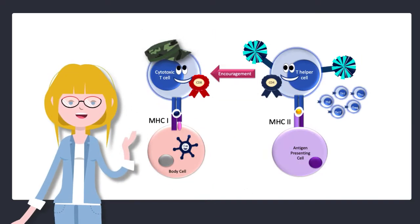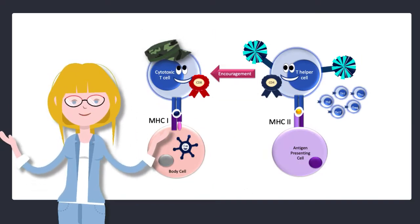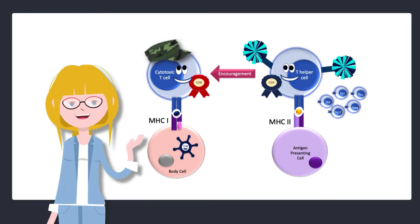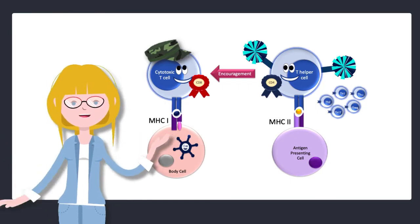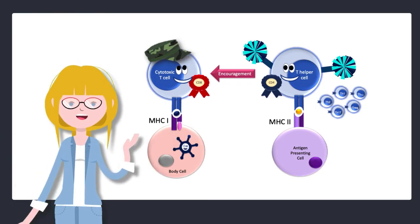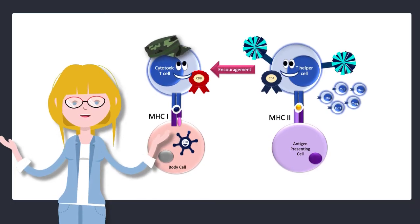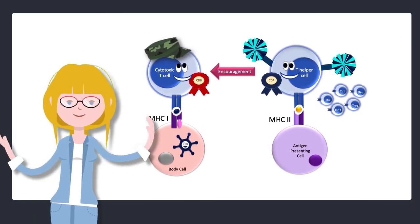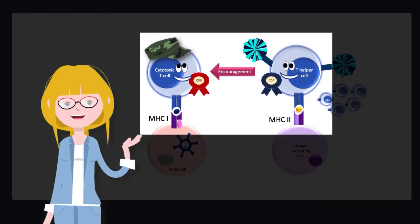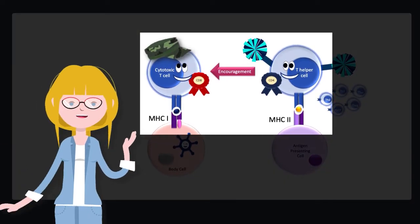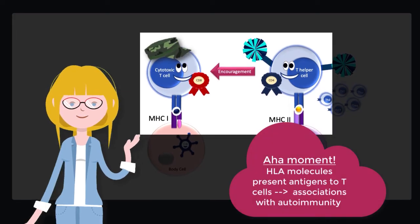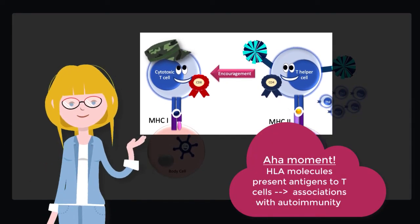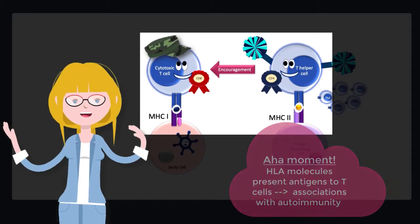If all of that sounds brand new, you need to stop right now and go back to Season 1 of this series and watch the episodes about T cells — that'll give you absolute clarity. Otherwise, if this is familiar, stay with me. With that information top of mind, we can see how HLA genes code for molecules which present things to T cells, and in that way it makes so much sense that variations in the genes for these molecules could be associated with autoimmune disease.